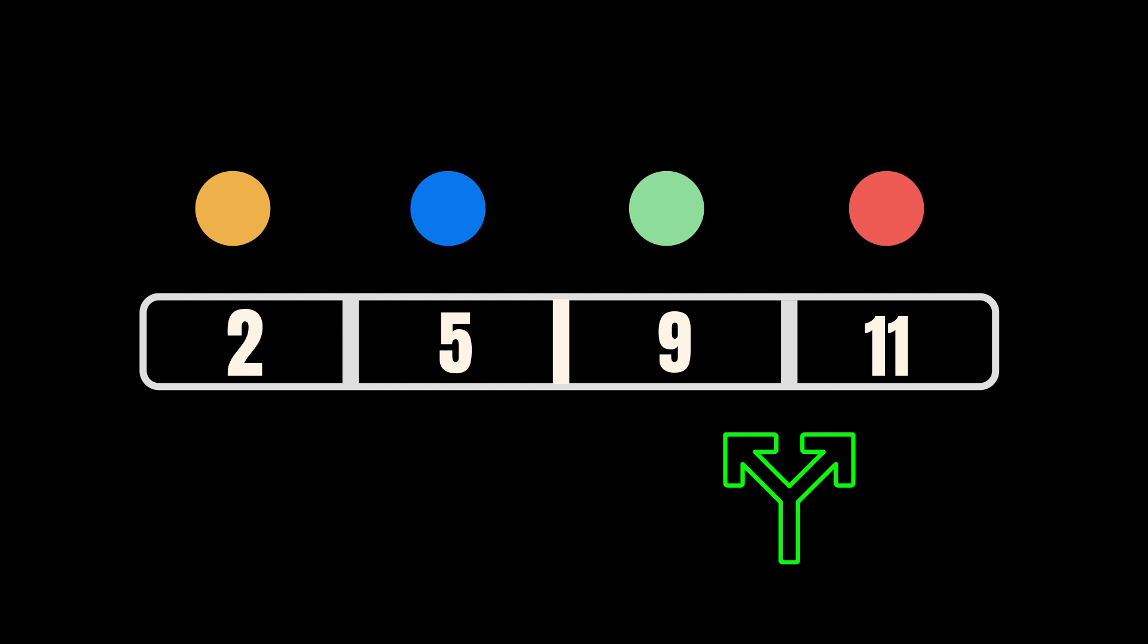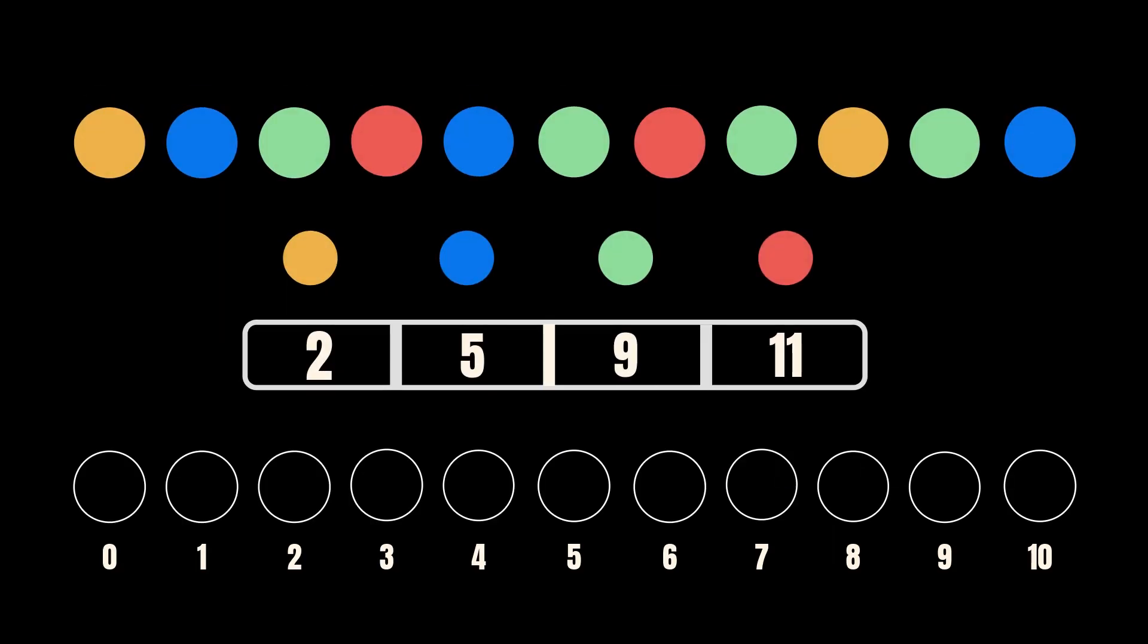In the next step, we place the objects in their correct positions and decrease the count by one. Starting at the end of the input, we have the blue color.